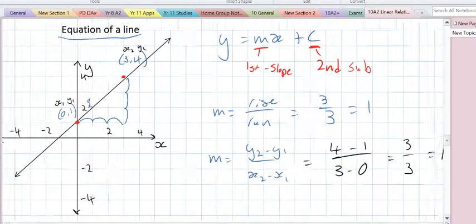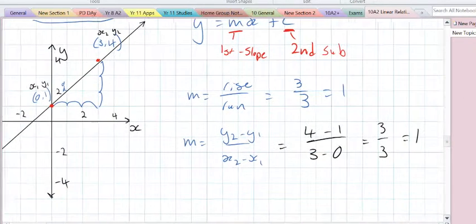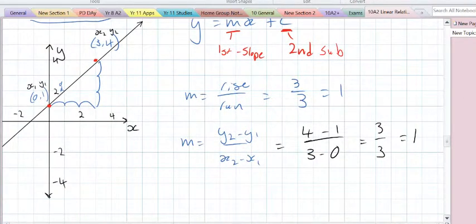It doesn't matter if we choose to simply count how many across and how many up, or if we choose to use the formula, we still get a slope of 1.